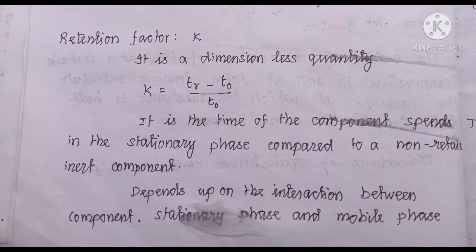The next one is the retention factor, k. The retention factor is the ratio of: (retention time of the analyte minus the retention time of the unretained analyte) divided by the time of the unretained analyte. It is a dimensionless, unitless quantity because both numerator and denominator involve time. It represents the time the component spends in the stationary phase compared to the non-retained inert component.